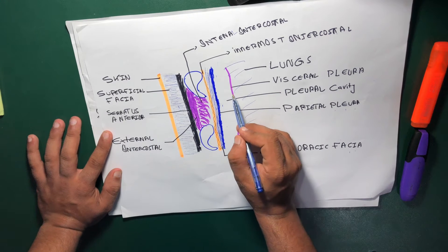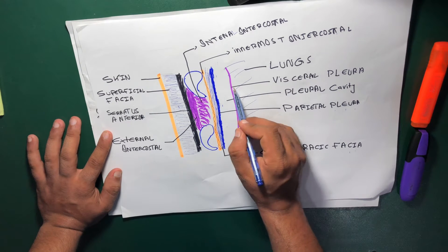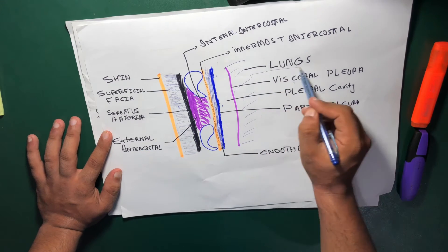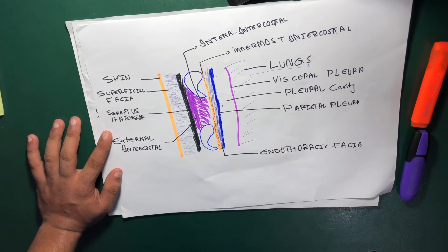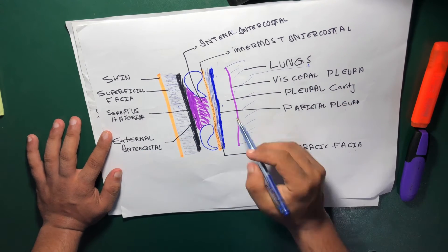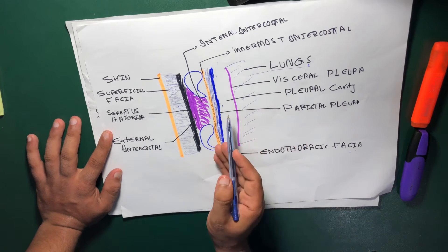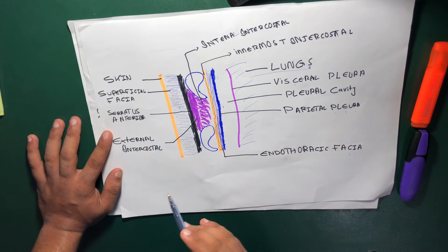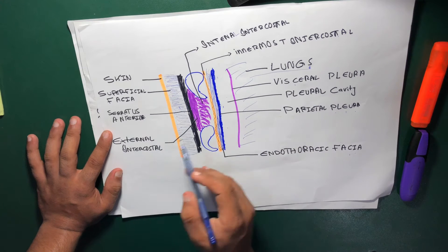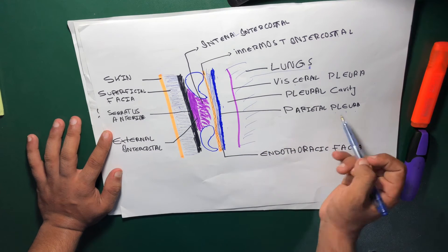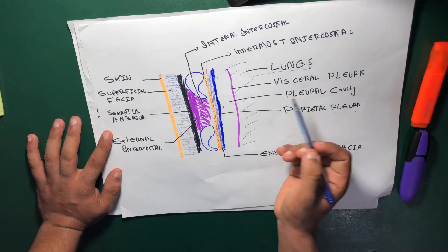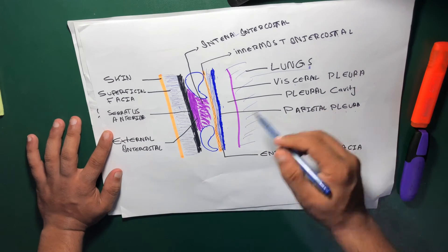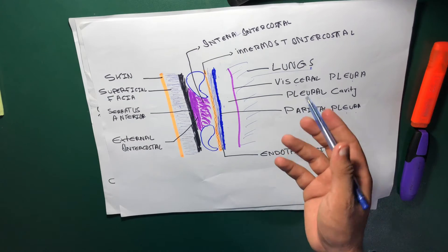As we go inside after crossing the pleural cavity, we have the visceral pleura which is actually covering the lung. Remember that the parietal pleura is the outermost, covering the thorax, while the innermost — the visceral pleura — is actually covering the lungs.